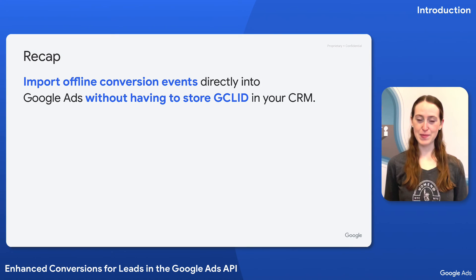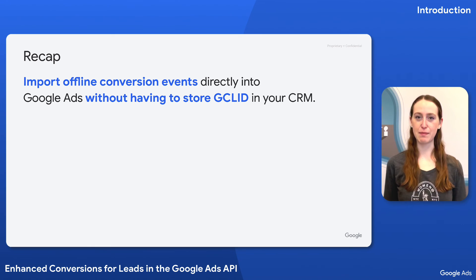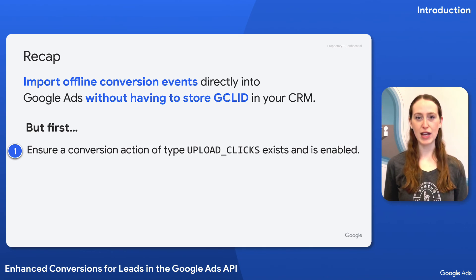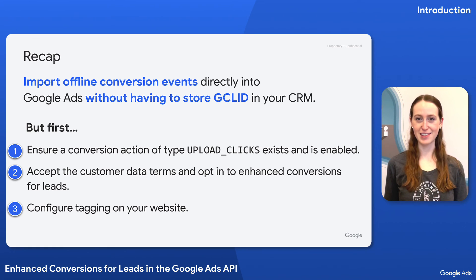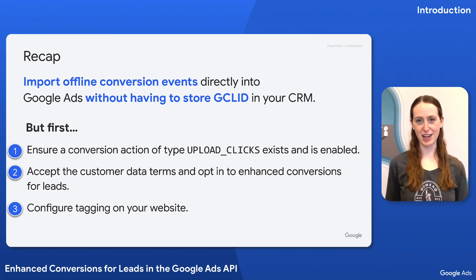Let's recap. Enhanced Conversions for Leads in the Google Ads API lets you improve your conversion reporting by sending additional first-party user information to Google Ads. In order for this to work, you must: create a conversion action of type Upload Clicks in your Google Ads conversion customer; accept the customer data terms and opt in to Enhanced Conversions for Leads in your Google Ads conversion customer; and configure tagging on your website to ensure conversion and lead form events are captured.